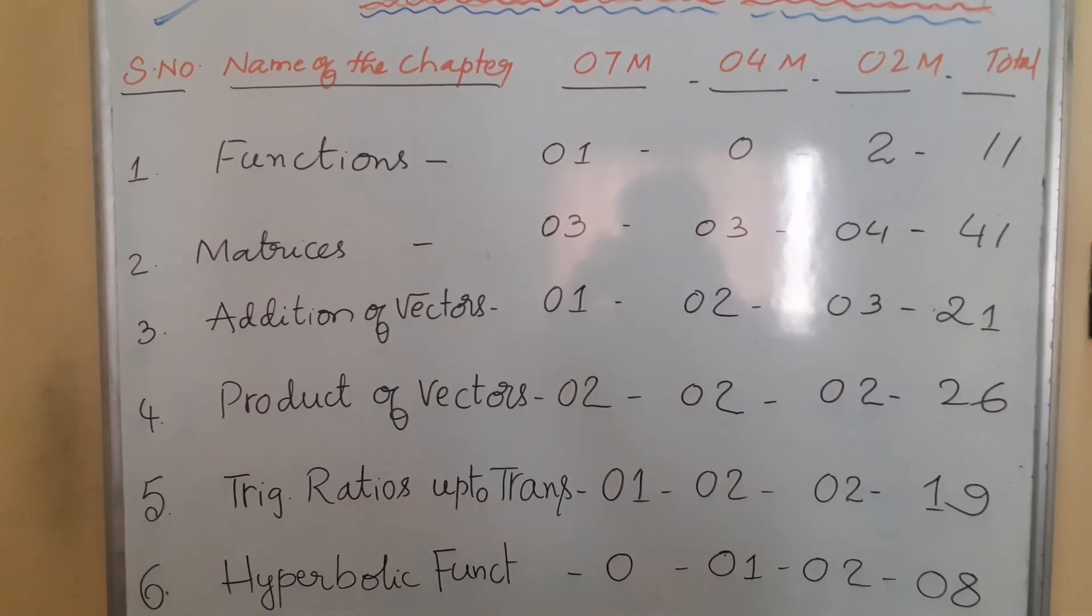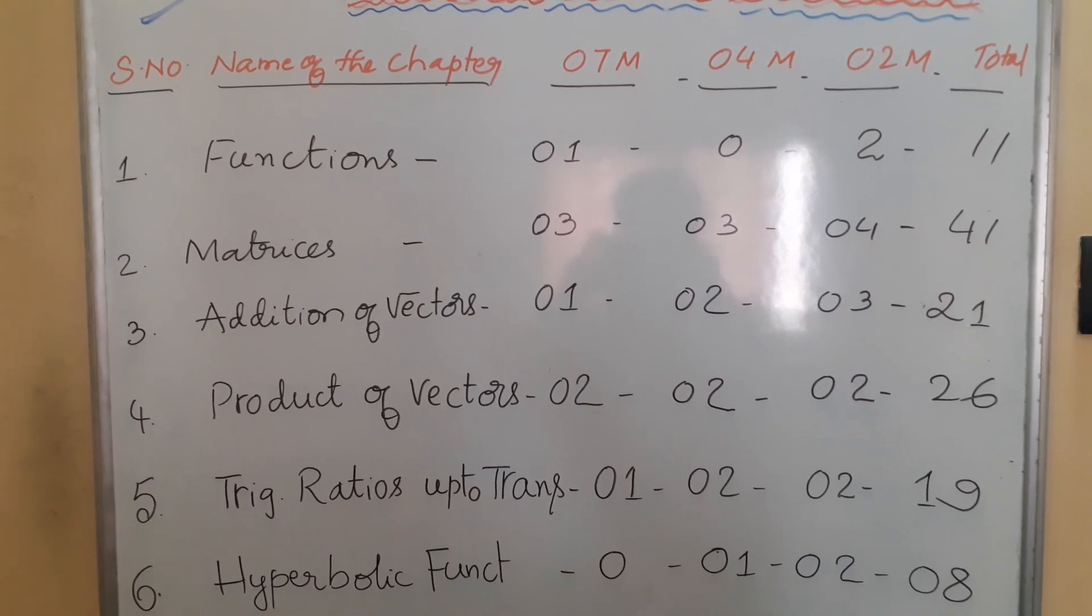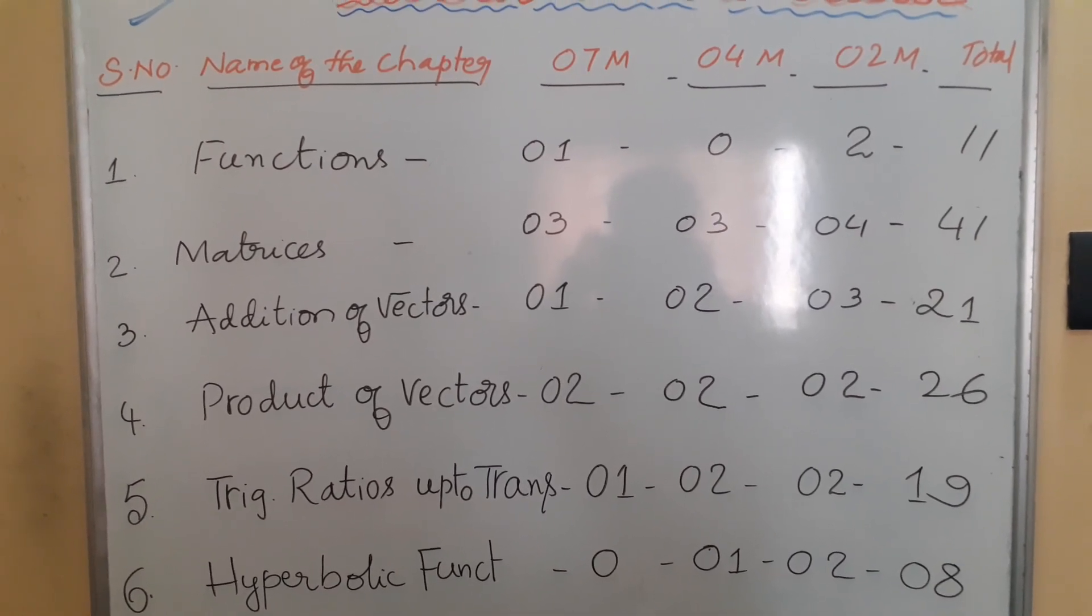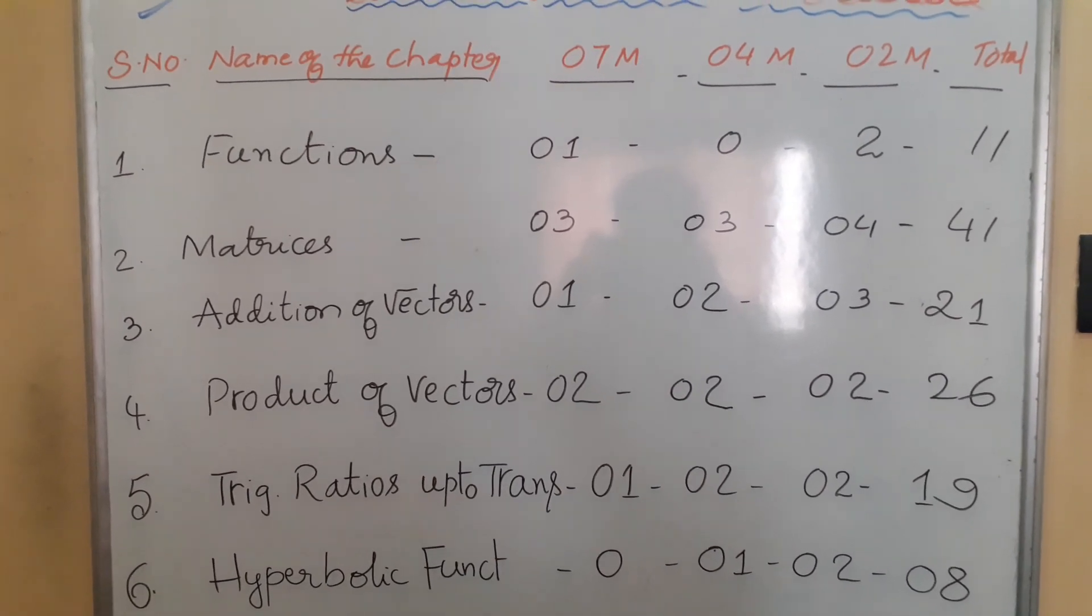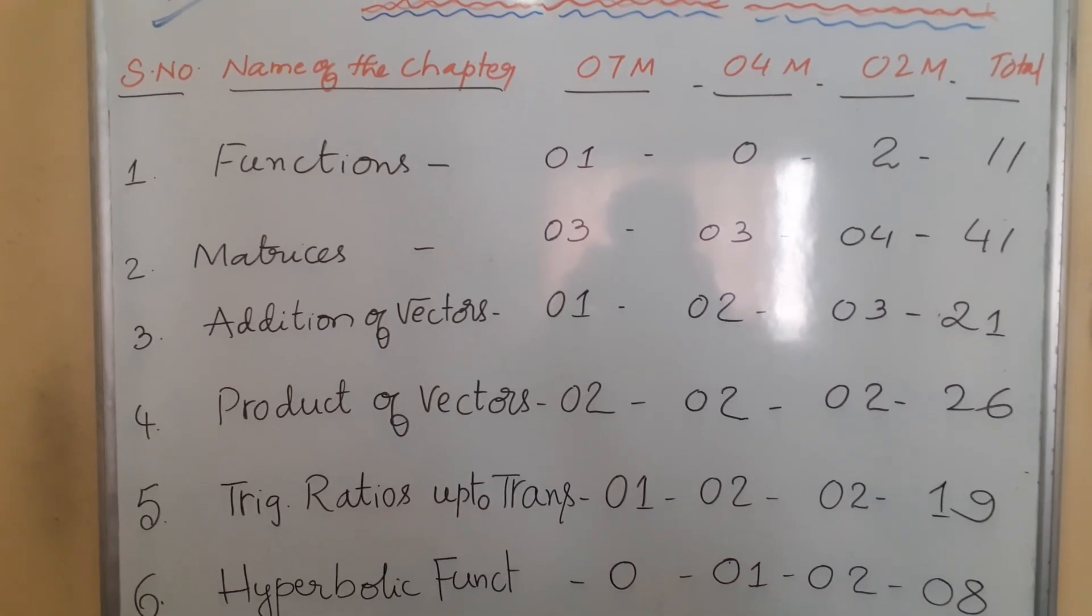Fourth one is Product of Vectors. Two 7-mark questions, two 4-mark questions, and two 2-mark questions. So 26 marks weightage is given to this chapter, Product of Vectors.